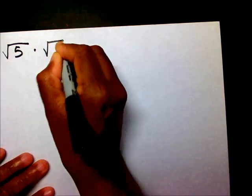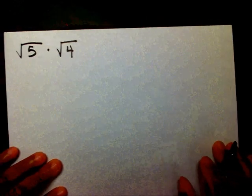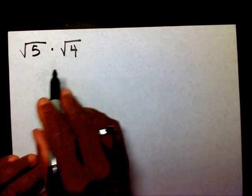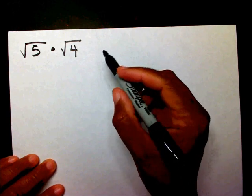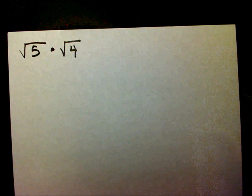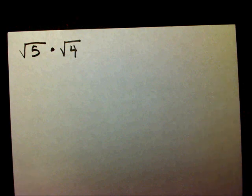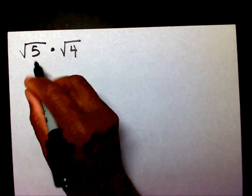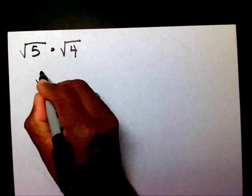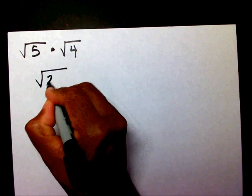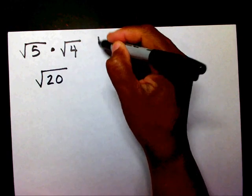Next we have radical 5 times radical 4. If you would like to multiply these two radicals before I solve them, you can do that. Please pause the video.